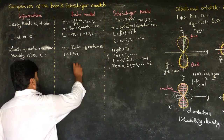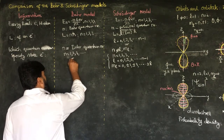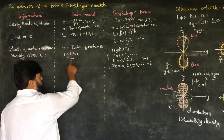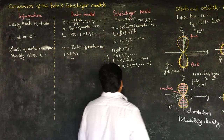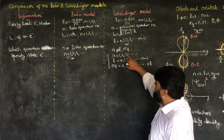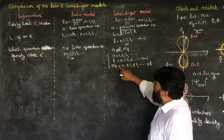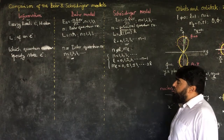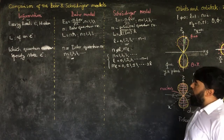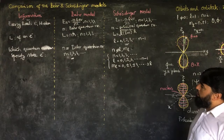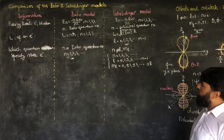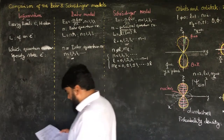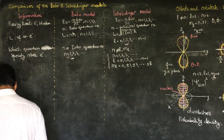In the Bohr model we have fixed orbits, which we also call shells. In the Schrödinger model we also have those shells, but additionally the concept of orbitals arises — inside each orbit there are further quantum states available, which we call orbitals.